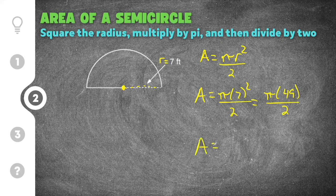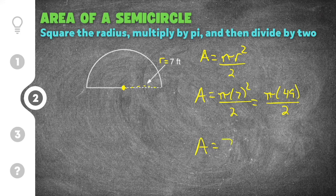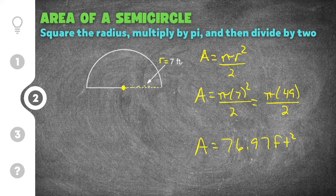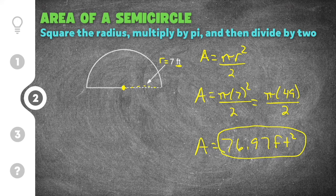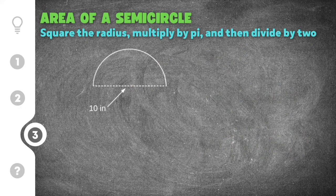Squaring seven gives us 49, divided by two. On the calculator, pi times 49 divided by two gives us 76.97. Our units are feet, and because we squared the radius, the answer is 76.97 feet squared.